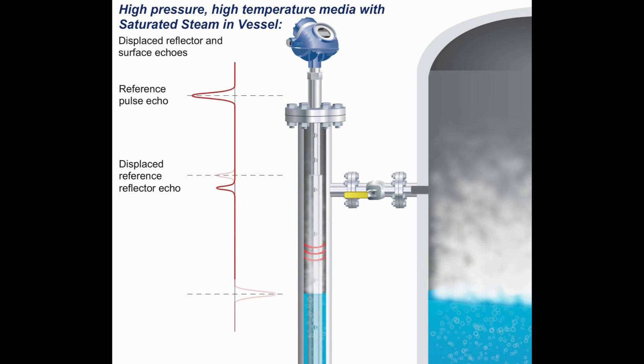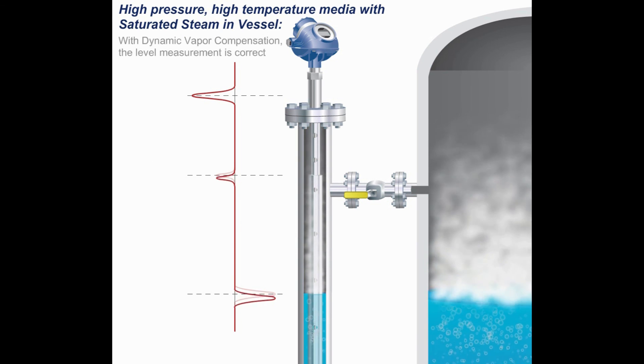Because the transmitter knows exactly where the reflector is, the distance the reflector pulse has been displaced can be used to calculate how much compensation is needed. It then determines the correct distance to the surface pulse and outputs the correct level.